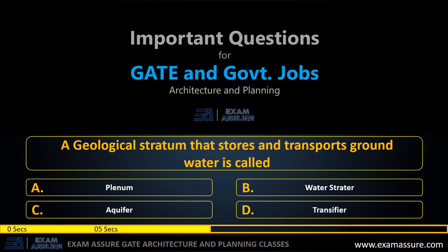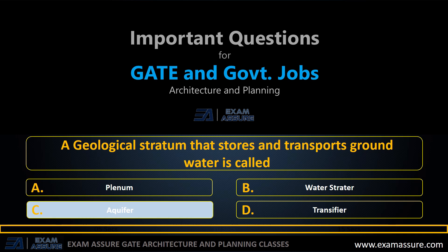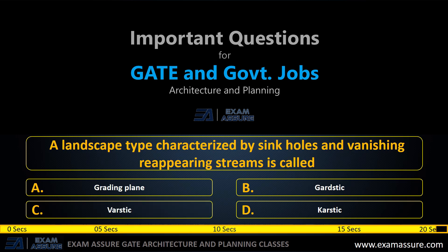Next question: A geological stratum that stores and transports groundwater is called — option A: planum, option B: water stratum, option C: aquifer, option D: transfer. The correct answer is aquifer.